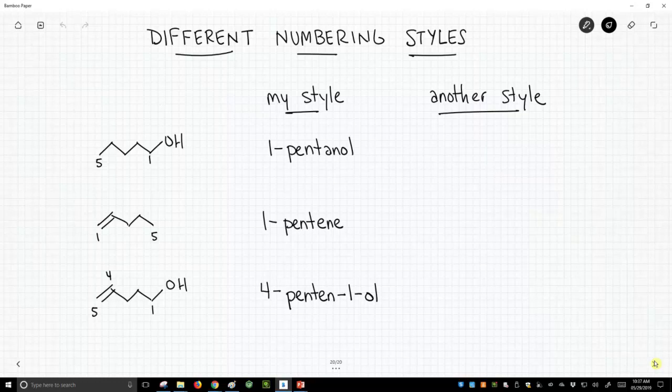So what you tend to do in this newer style is you tend to put the number as close to the indicator of the functional group in the name as possible. So instead of saying 1-pentanol, you would say pentan-1-ol to get that number one right up next to that ol. So it's very clear what the one is referring to.